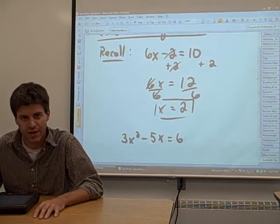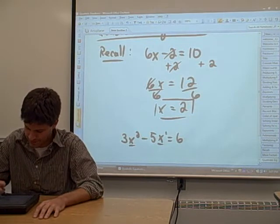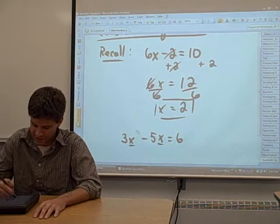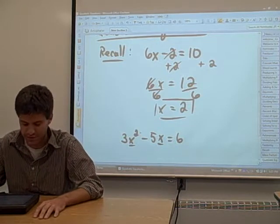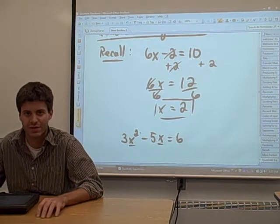This is called a quadratic equation, because while you do have an x with the first power on it here, you also have an x squared. The highest power on your x in this equation is a square, is a 2. So this is called a quadratic equation.